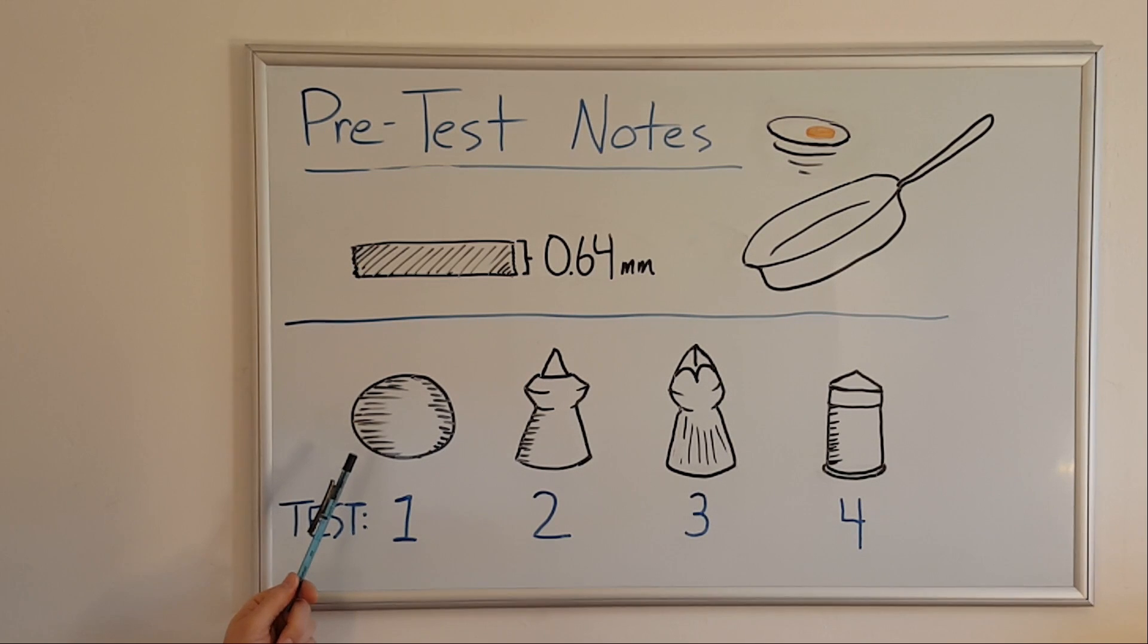First, we'll fire the H&N Round pellet, which appears to be a copper-plated lead ball. This pellet will make a good control for the test since it has no special shape and uses conventional materials.